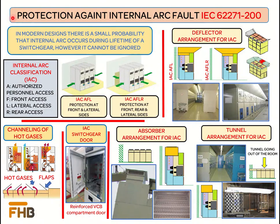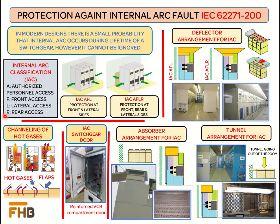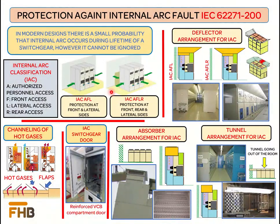IEC 62271-200 defines the accessibility class for internal arc classified switchgears. Accessibility Class A is restricted to authorized persons only, while Class B is for unrestricted areas including the general public. The letters F, L, and R represent the sides of the switchgear where protection is provided in case of an internal arc fault: F represents the front side, R represents the rear side, and L represents the lateral sides. If the switchgear installation is against the wall, normally AFL classification is considered. AFL-R classification provides protection on all sides of the switchgear. As per IEC 62271-200, the recommended test durations are 1 second, 0.5 second, and 0.1 second.